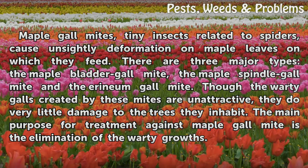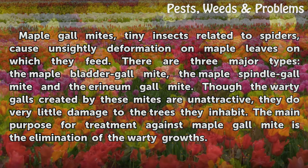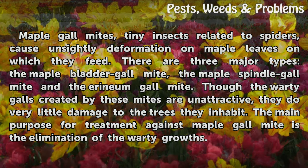There are three major types: the Maple Bladder Gall Mite, the Maple Spindle Gall Mite, and the Araneum Gall Mite.